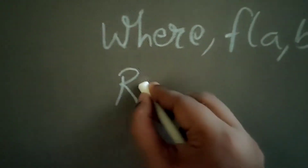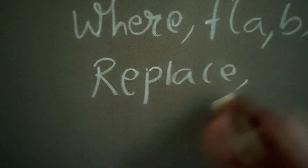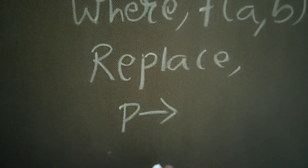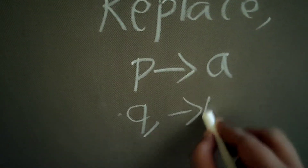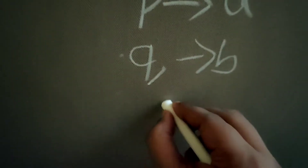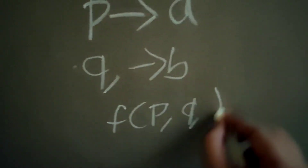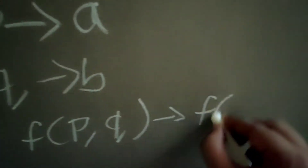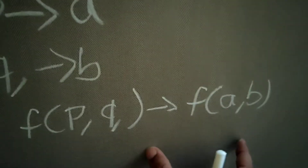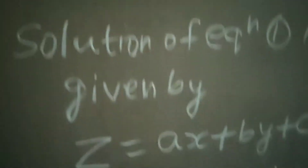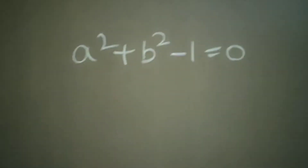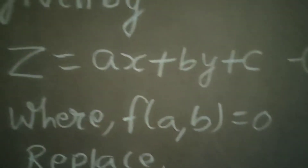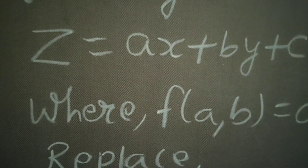To get the function f(a, b), just do a simple replacement: replace p in f(p, q) with a, and replace q with b. So from f(p, q) you can easily switch to f(a, b). So our f(a, b) will be: a² + b² − 1 = 0.